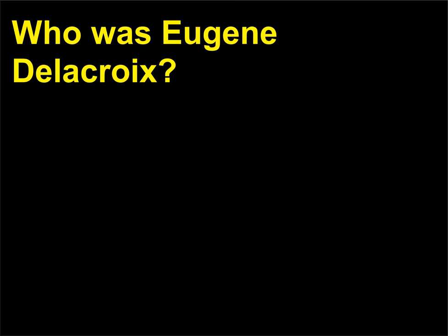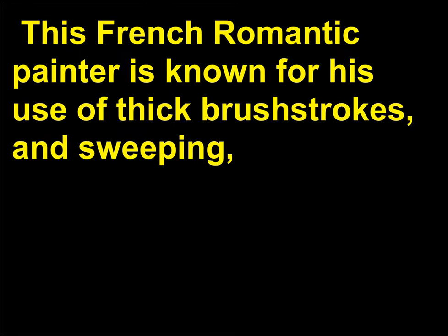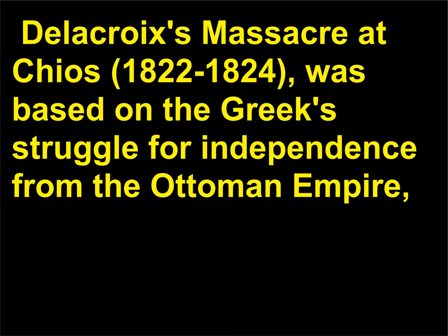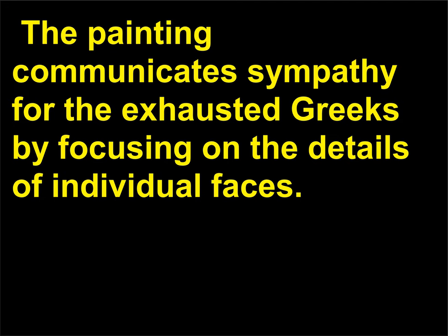Who was Eugène Delacroix? Eugène Delacroix, 1798–1863, was not interested in the defined forms and classical Stoicism promoted by the Academy. This French Romantic painter is known for his use of thick brush strokes and sweeping, dramatic scenes inspired by mythology, current events, and his trips to North Africa. Delacroix's Massacre at Chios, 1822–1824, was based on the Greeks' struggle for independence from the Ottoman Empire, an event that influenced many Romantic writers and artists. The painting communicates sympathy for the exhausted Greeks by focusing on the details of individual faces.